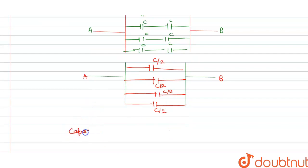Now, the capacity between A and B is equals to C by 2 plus C by 2 plus C by 2 plus C by 2, and this is connected to this like S.